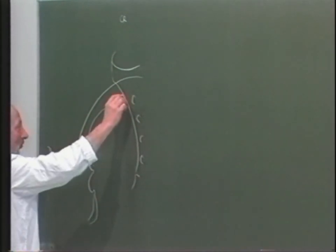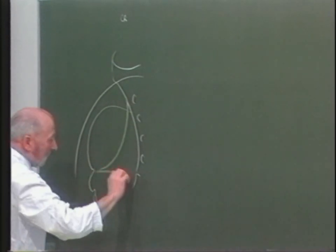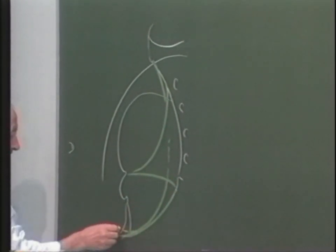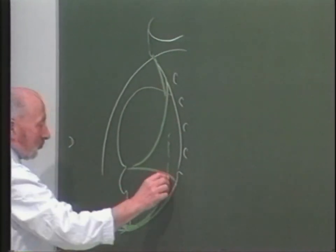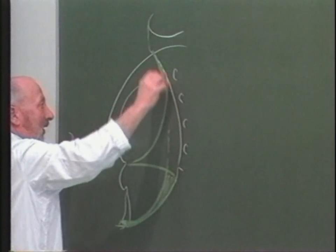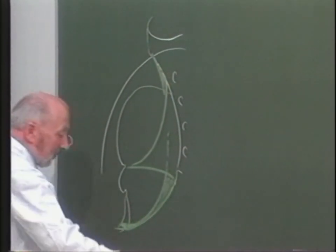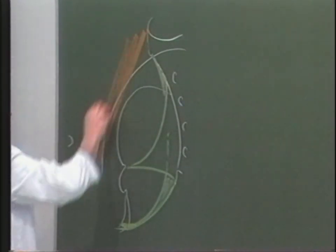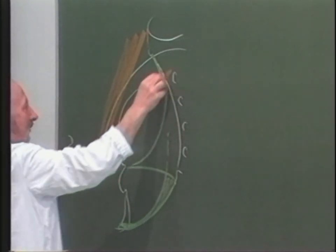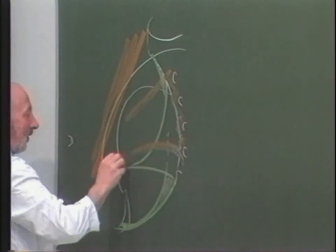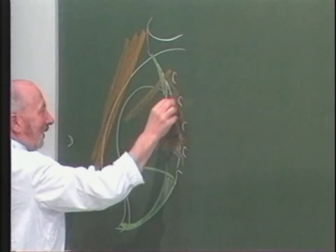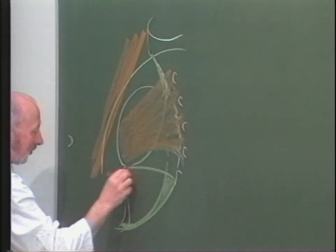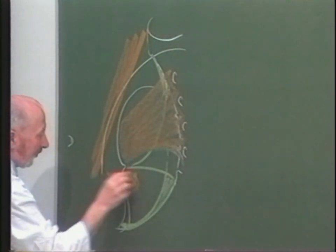Ces formations vont être complétées par les ligaments : le petit ligament sacro-sciatique ou ligament sacro-spinal, le grand ligament sacro-sciatique ou ligament sacro-tubéral, qui va venir sur la tubérosité ischiatique dessiner le repli falciforme du canal d'Alcock. On évoque également les masses musculaires : le bord médial du psoas, puis le muscle piriforme, inséré sur la face antérieure du sacrum, sortant par la grande échancure ischiatique, et le muscle obturateur interne, sortant par la petite échancure sciatique.